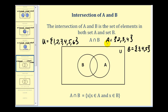We can see that sets A and B share the elements three and four, so that would be in this overlapping region here. Set A also contains the element two, so there would be a two in A's region. And then set B also contains the element five, so we'd have a five in B's region. That leaves the elements one and six in the universal set. So the intersection of A and B contains the elements three and four.